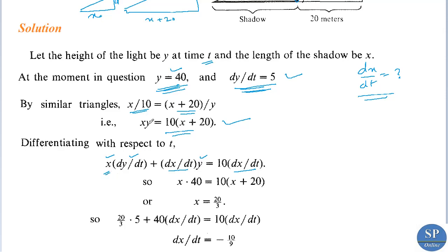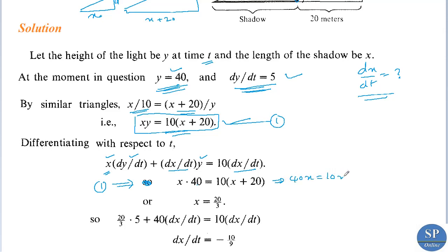We can find x by substituting y equals 40 into the equation xy equals 10(x + 20). So x into 40 equals 10 into x plus 20, which gives 40x equals 10x plus 200, so 30x equals 200, therefore x equals 200 divided by 30, that is 20 divided by 3.